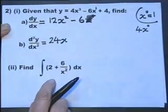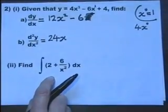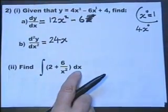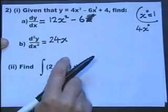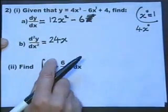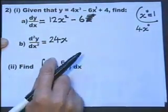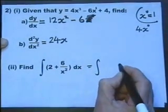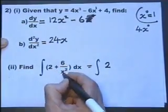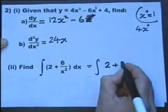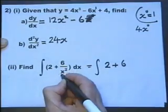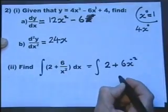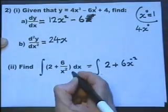Now let's look at this. Integrate, with respect to x, this expression. This is an integral sign. Sometimes you need to rewrite the expression before you get started. In fact, we do have to rewrite 6 over x squared as 6x to the power of minus 2. That's called the reciprocal.